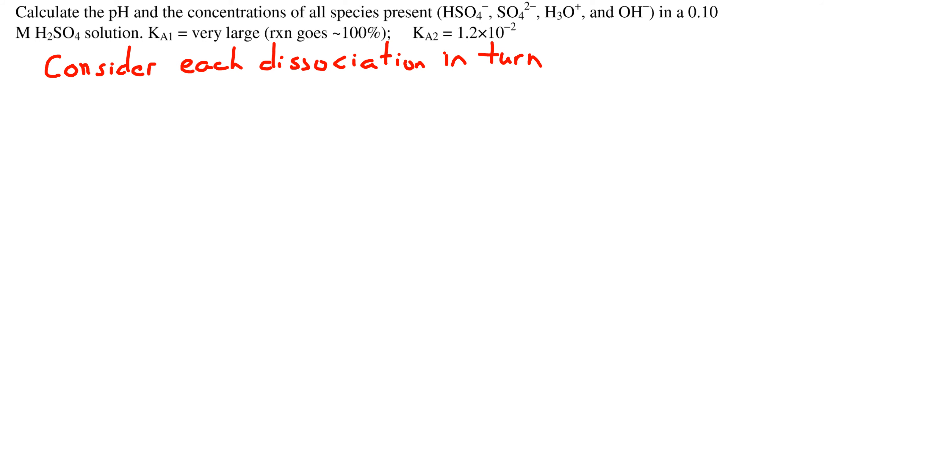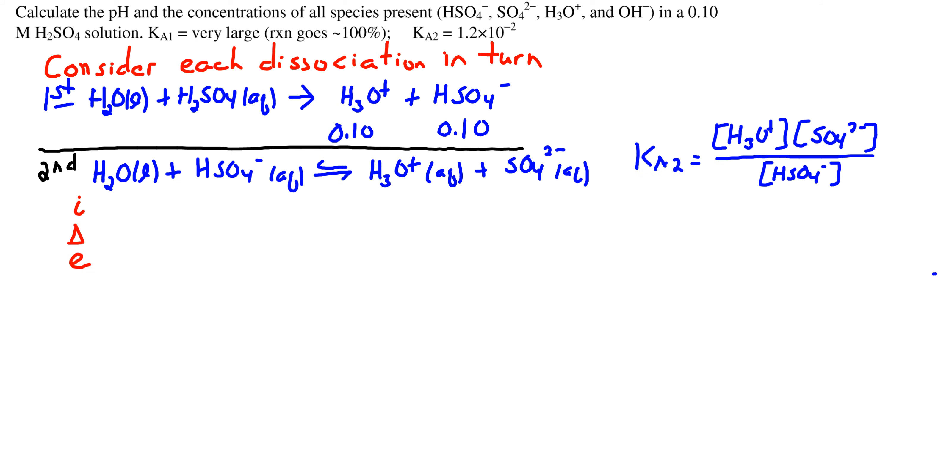This is a polyprotic acid problem. Sulfuric acid is slightly different than some other polyprotic acids in that the first dissociation is 100%. For the second dissociation, we're starting with an initial concentration of H3O+ of 0.1 and HSO4- initial concentration of 0.1.